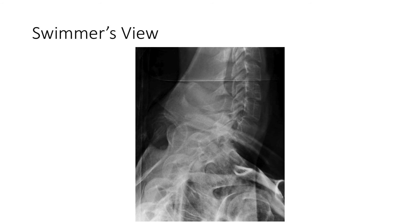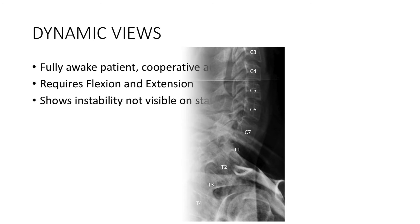When looking at the swimmer's view, we assess coverage and alignment. For coverage, the cervical-thoracic junction should be seen. We check the alignment by carefully matching the corners of each adjacent vertebral body anteriorly and posteriorly.